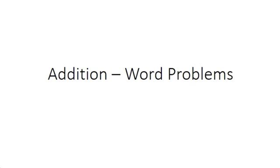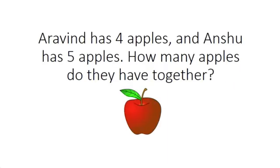Addition Word Problems. Arvind has 4 apples and Anshu has 5 apples. How many apples do they have together?